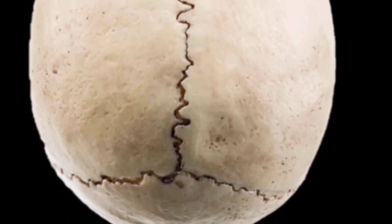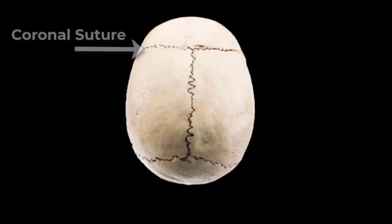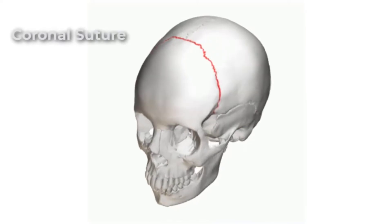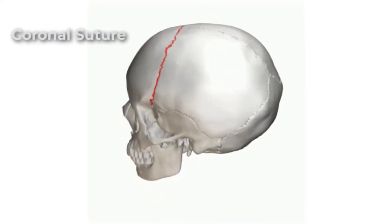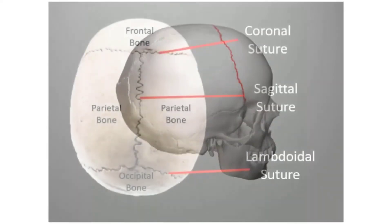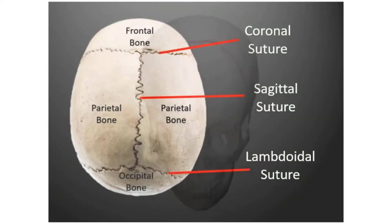The two suture lines seen on top of the skull are the coronal and sagittal sutures. The coronal suture runs from side to side across the skull within the coronal plane. It joins the frontal bone to the right and left parietal bones.